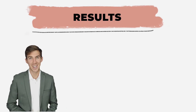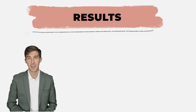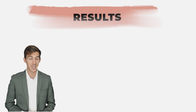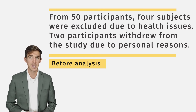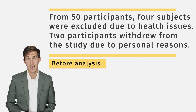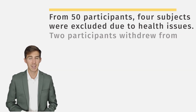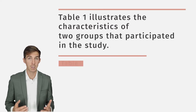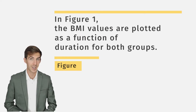Let's move on to the results section. This is where you present the core findings of your study. You must present your results in a logical sequence and do not interpret them here — save that for the discussion section. Before jumping into results, let the audience know if you did any pre-processing or data cleanup. In our case, four participants were excluded due to health issues and two dropped out for personal reasons, leaving us with a slightly smaller sample size. Try to present data in figures and tables, and only elaborate the most important results in the main text. We present the characteristics of both groups in a table, and plot the change in BMI over time as a figure.